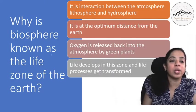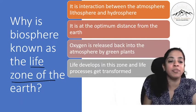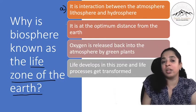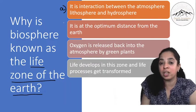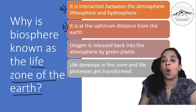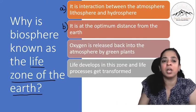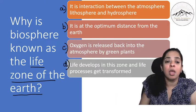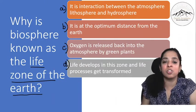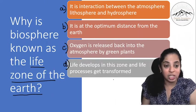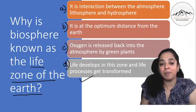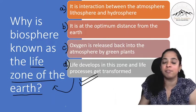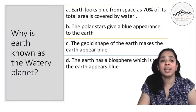Let's go ahead quickly. Why is biosphere known as the life zone of the Earth? Is it because of interaction between atmosphere, lithosphere and hydrosphere? Or it is at optimum distance from the Earth? Or oxygen is released back into the atmosphere by green plants? Or because the life develops in this zone and life processes get transformed? So yes, the life develops in this zone and the life processes get transformed. That is why it is known as the life zone of the Earth. Very good.